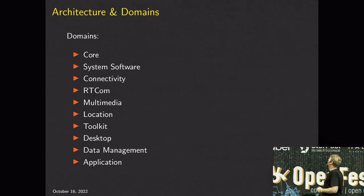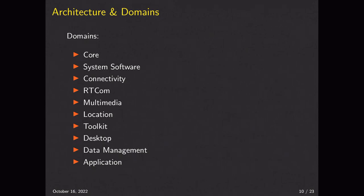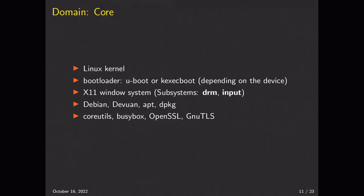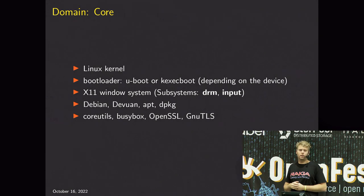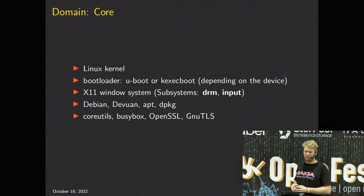I'm going to look at ten different domains of the Maemo architecture. You can find all of these on the old Nokia wiki. First, the core domain: all our devices run the Linux kernel, which deals with all the hardware setup, power management, when to enable the vibration motor, how to talk with the audio driver, how to talk with the modem. All that stuff is drivers in Linux. If you don't have the driver, the phone is useless - so this is a very important part.